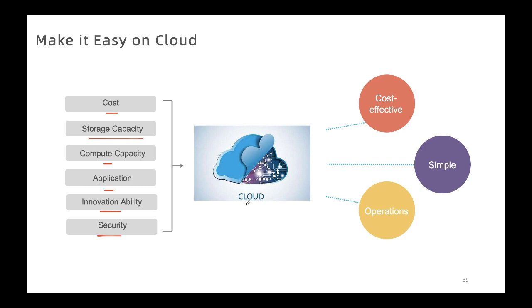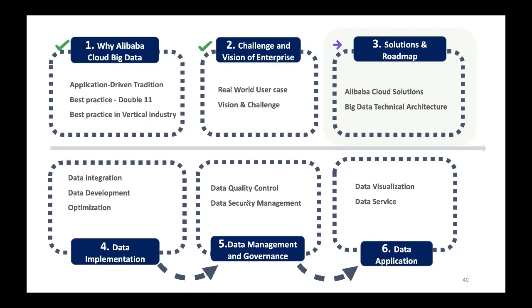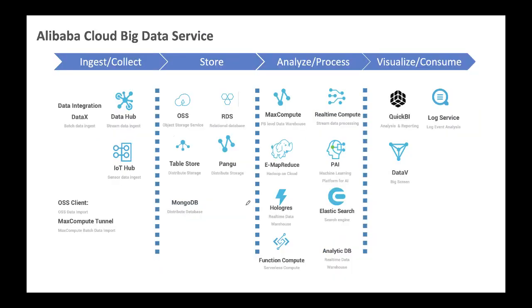Putting everything on the cloud makes it easier. Now let's look at what we provide technically. The big data services are divided into four core areas: data collection and storage, analysis and processing, data visualization, and consumption.